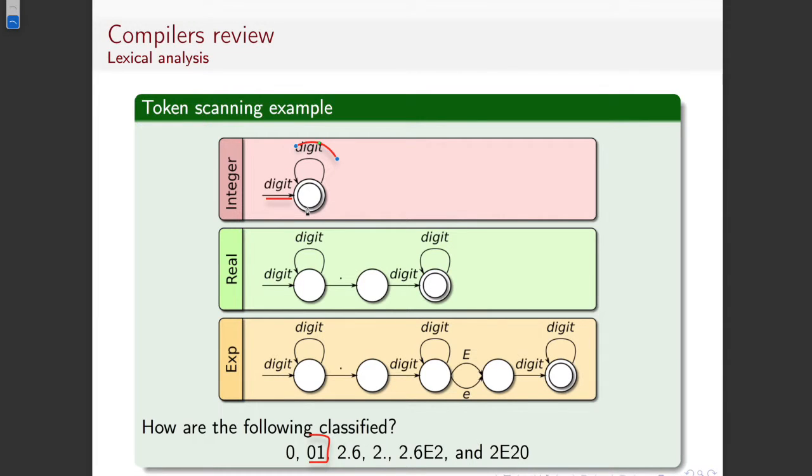The same basically applies to zero one. So, there we get zero for the first one, which comes through there and then we go one through here and we're done. 2.6 obviously doesn't work with integer because we don't know how to handle dots. For the real number, we start with the two. Then we get the dot so we move to the next node. And then we get six, so we move to the end node. And we're on the end node. Well done.